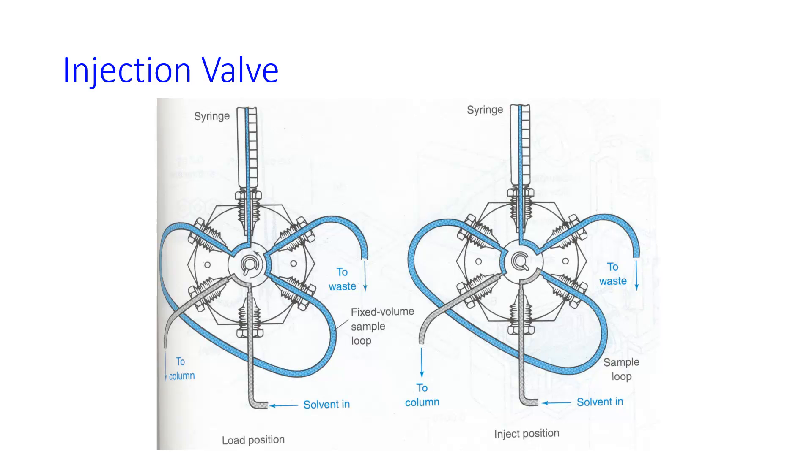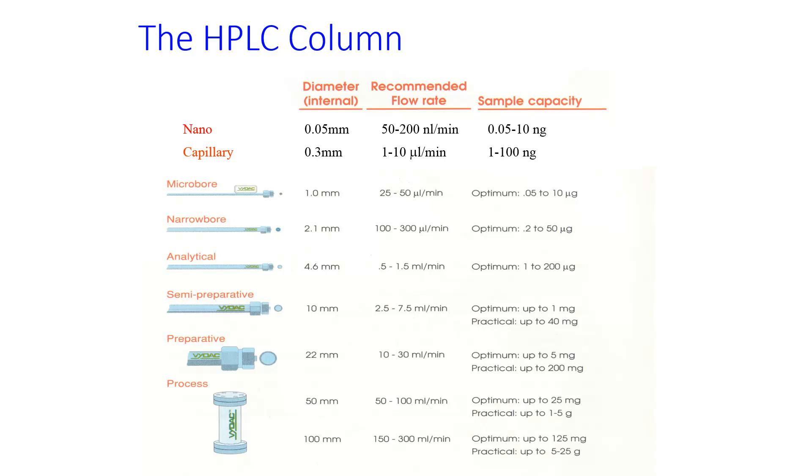From there, the sample and the mobile phase solvent go into the HPLC column. And there are many different kinds of these which all have their own uses. They can go from a nano column, which is extremely small, very low flow rate, very low sample capacity, up to a process column that might be used by a drug company where you can do 20 grams of sample in the column, 300 milliliters per minute.